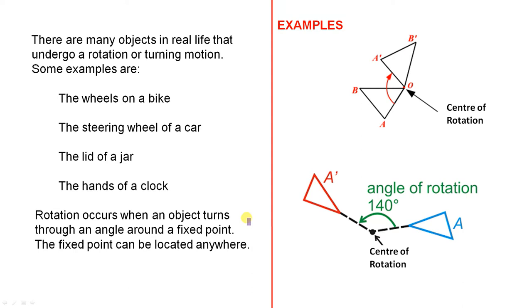Rotation occurs when an object turns through an angle around a fixed point. The fixed point can be located anywhere. Let's look at some examples.